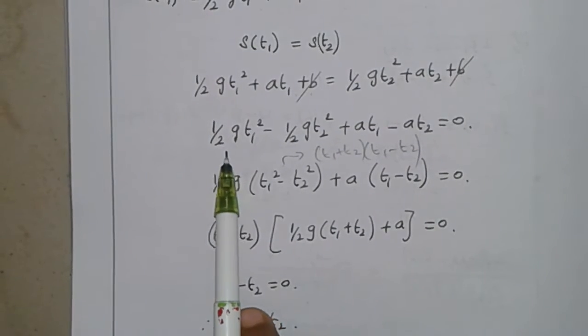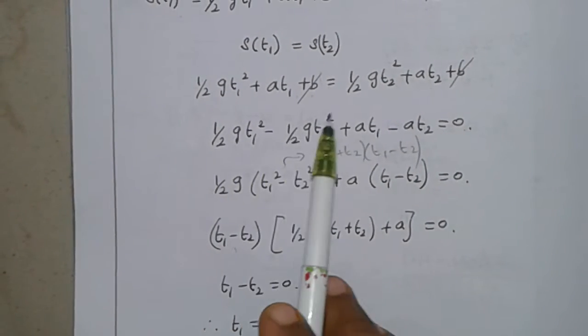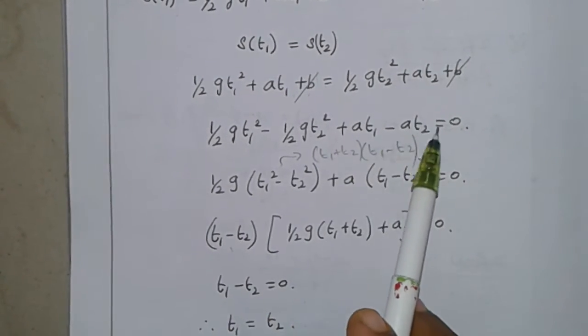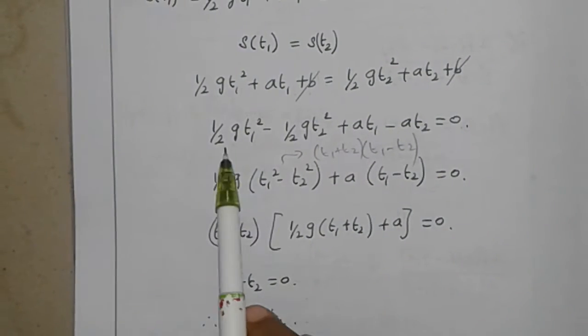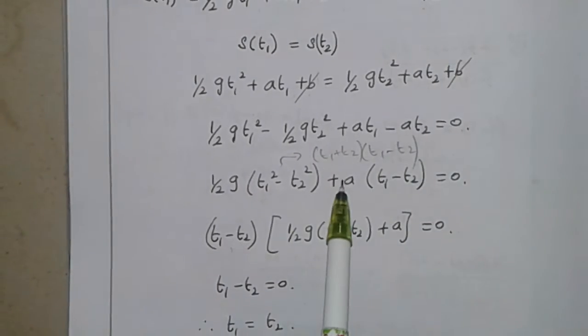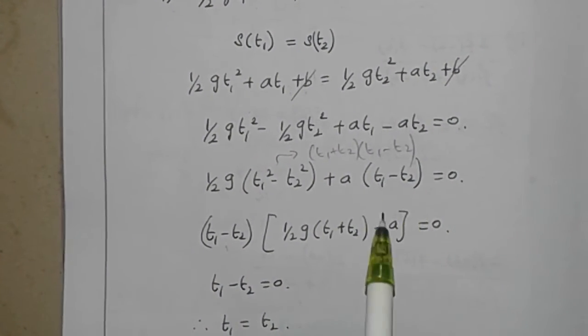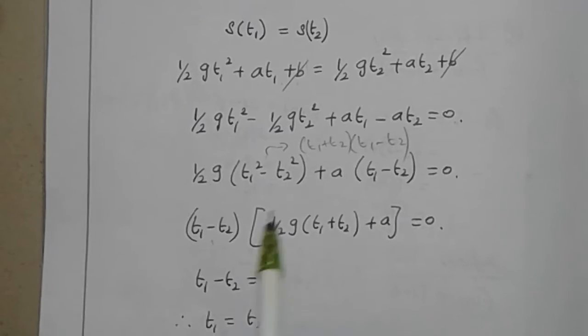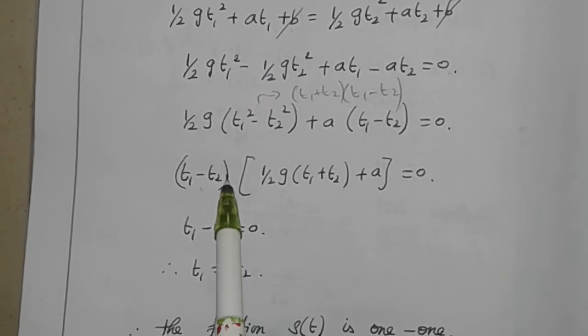We have (1/2)gt₁² - (1/2)gt₂² + at₁ - at₂ = 0. Factor out (1/2)g as common, giving (1/2)g(t₁² - t₂²) + a(t₁ - t₂) = 0. This is a square minus b square format.